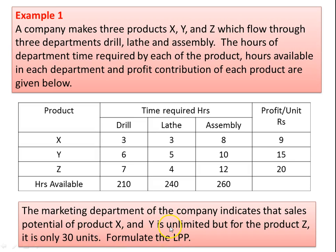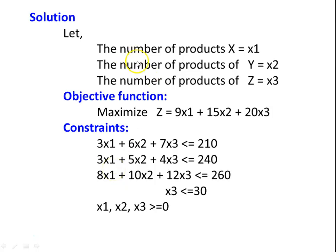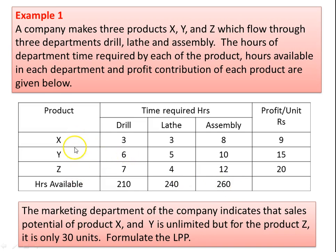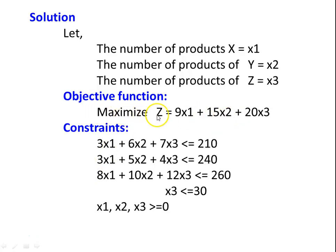By selling x1 units of product x, x2 units of product y, and x3 units of product z, we get the objective function. The profit is 9 per unit of x1, 15 per unit of x2, and 20 per unit of x3. So the objective function is: Maximize Z = 9x1 + 15x2 + 20x3.